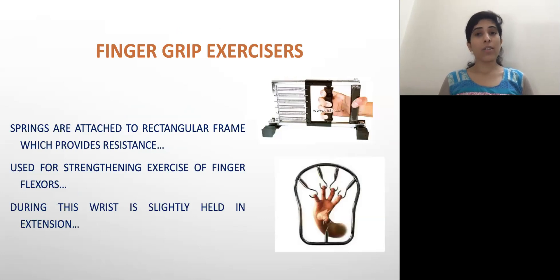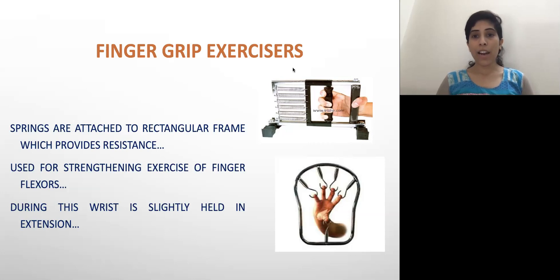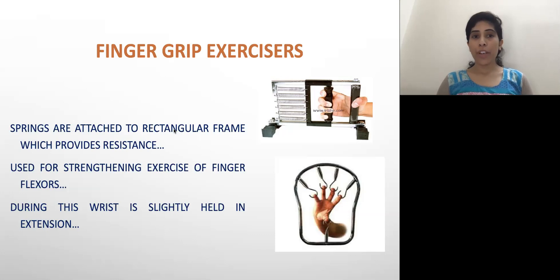Finger grip exerciser, also called a spring. It is mainly used for strengthening exercises of the distal upper extremity, that is the fingers and wrist. Different shapes of springs are available, including a thumb spring, finger spring, and rectangular shape. These springs are attached to a rectangular frame and the patient performs exercises against the resistance it provides. Again, the wrist is kept slightly in extension to avoid overuse of the flexor muscles at multiple joints simultaneously.